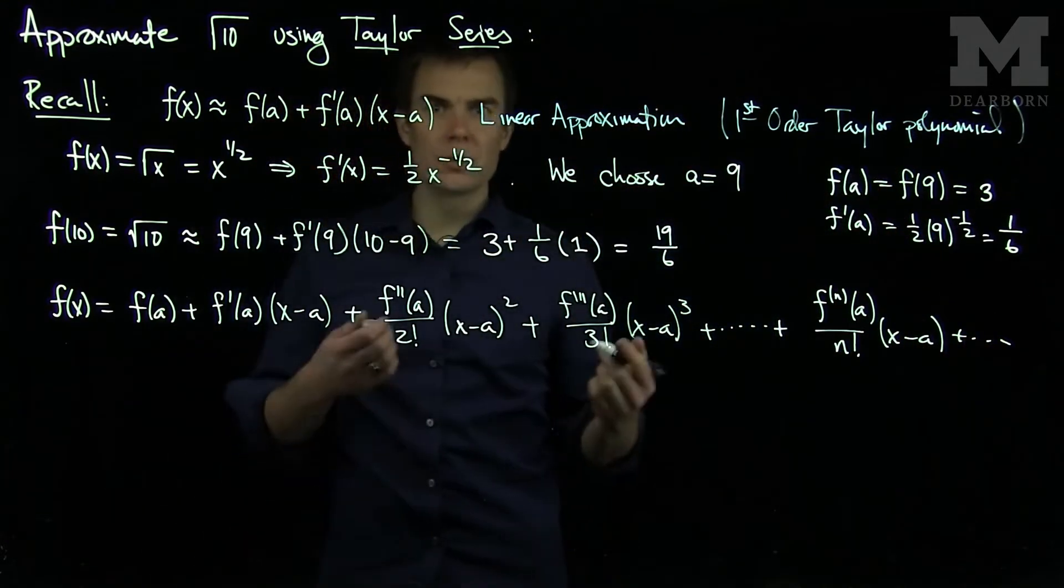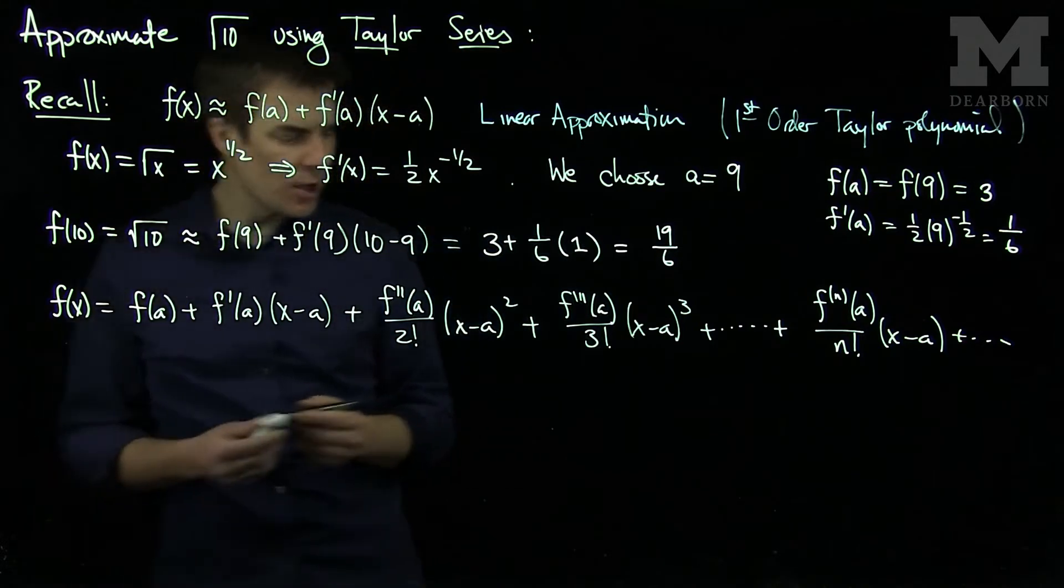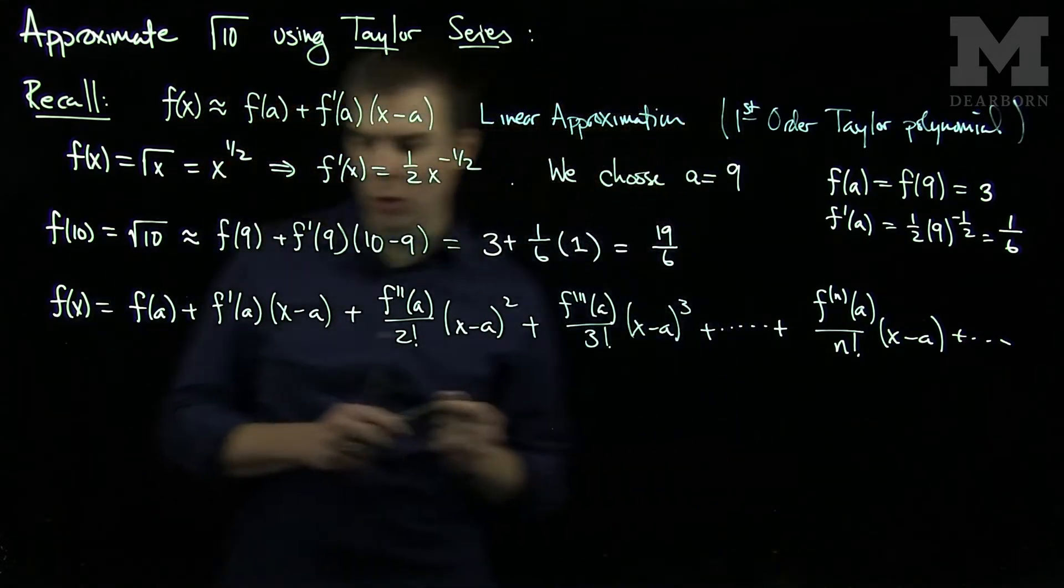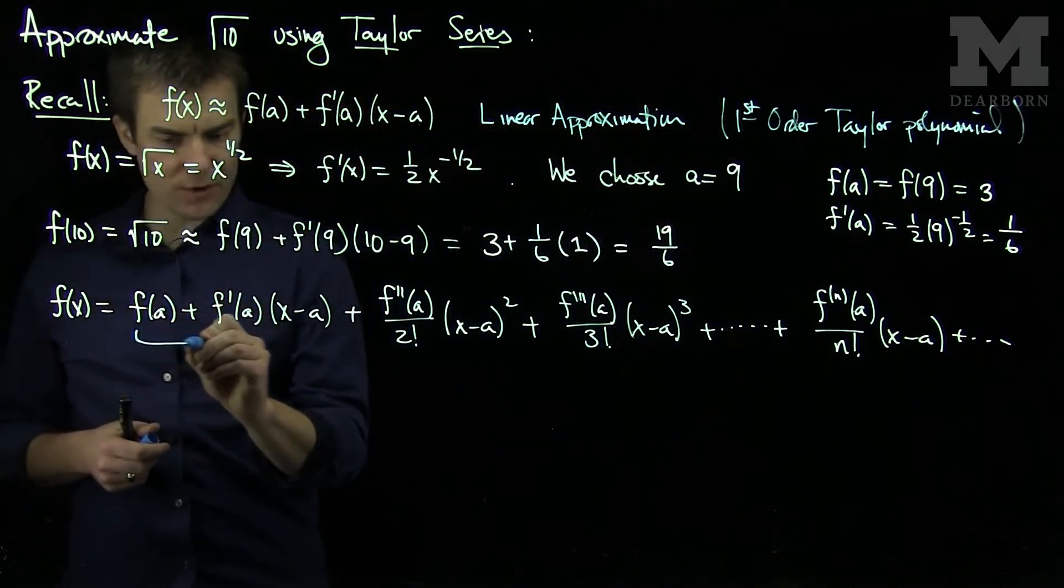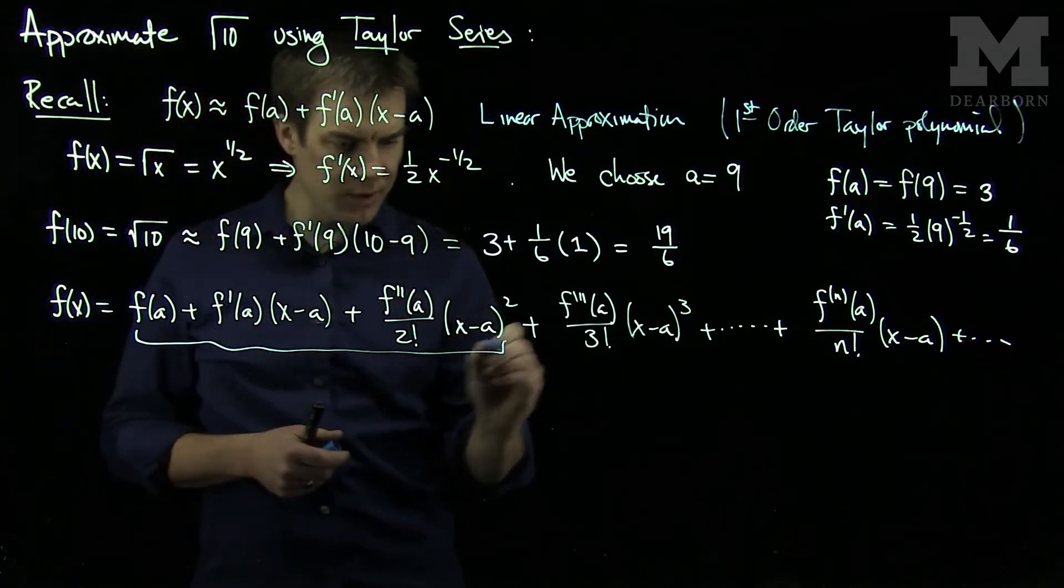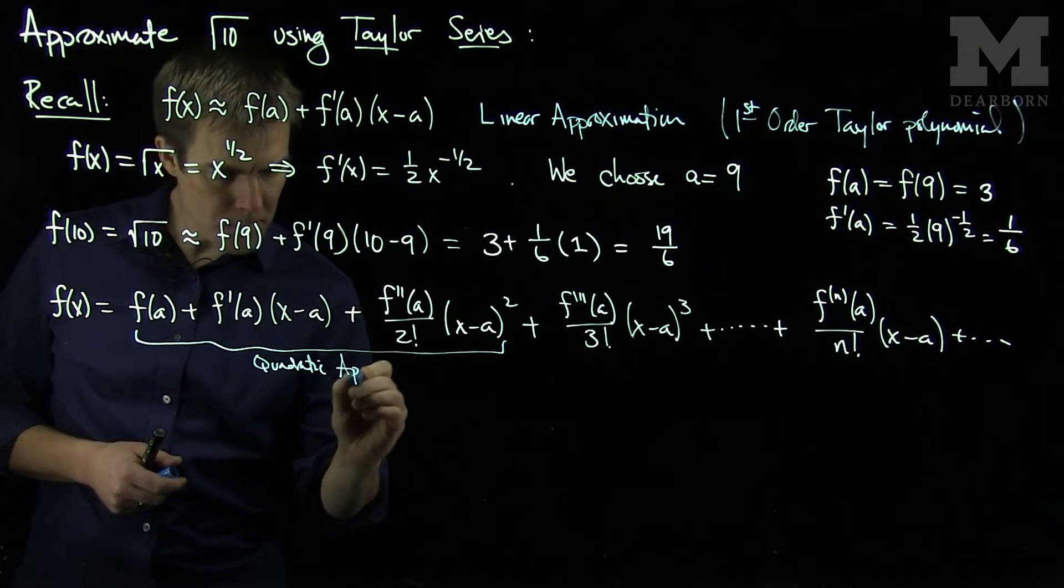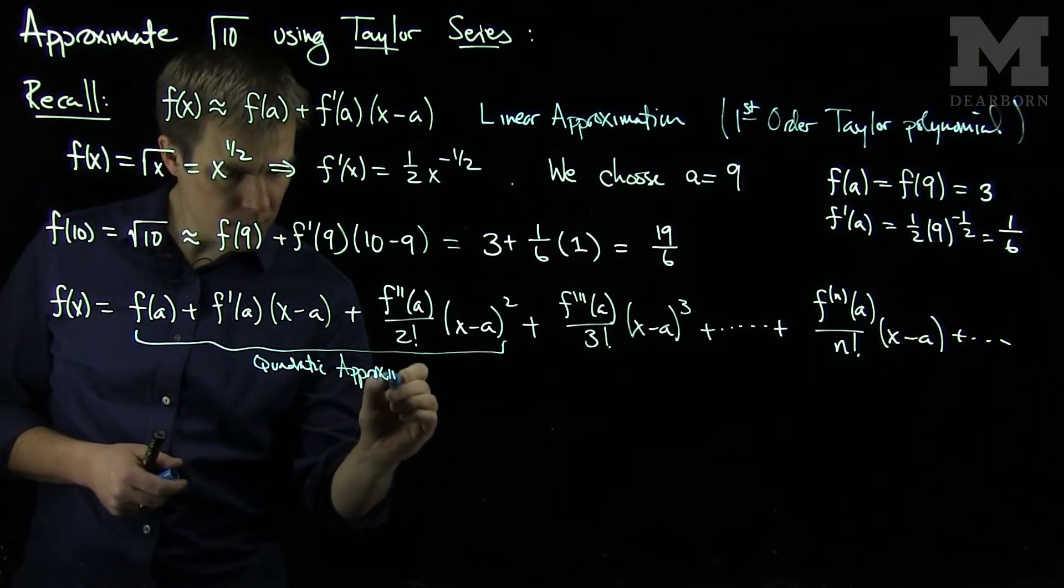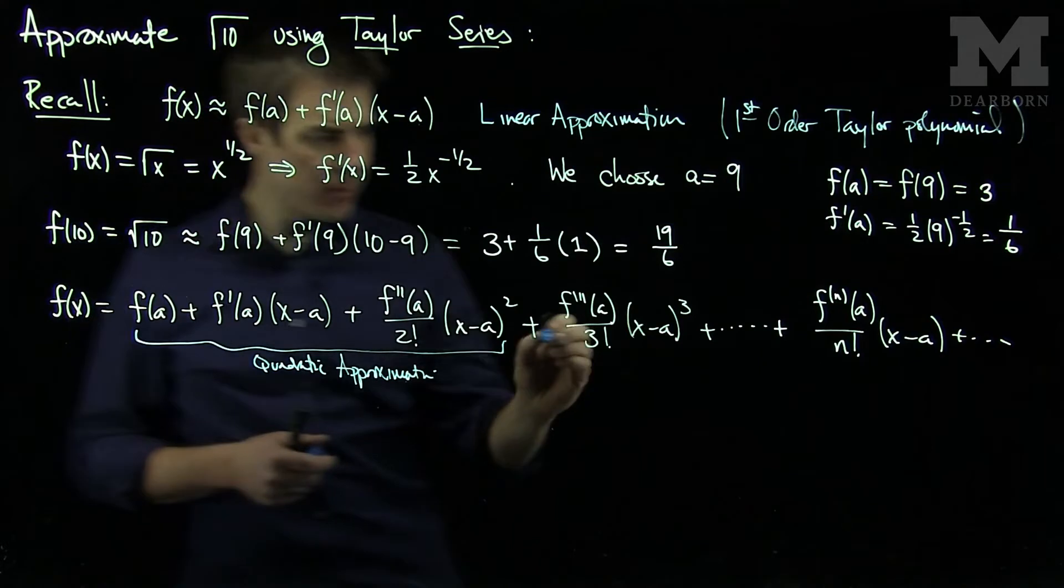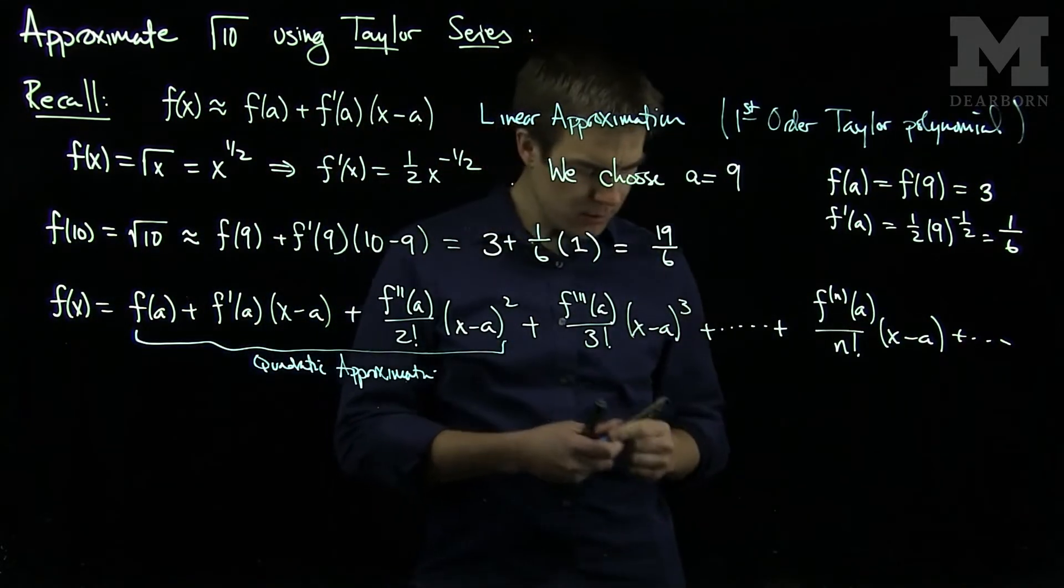So what we'll do is to use our approximation, we can choose to go as deep as we want in the Taylor series. So for this example, we'll just use the quadratic approximation. So the first three terms in the Taylor series, these first three terms over here, are the quadratic approximation. And the remaining terms are the error in your approximation.